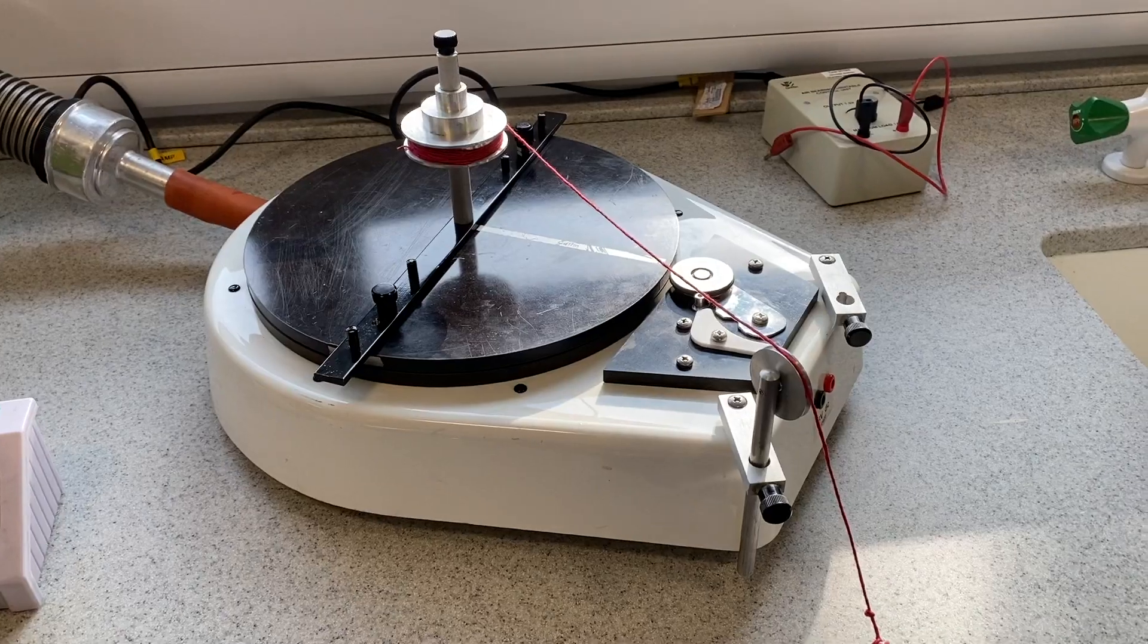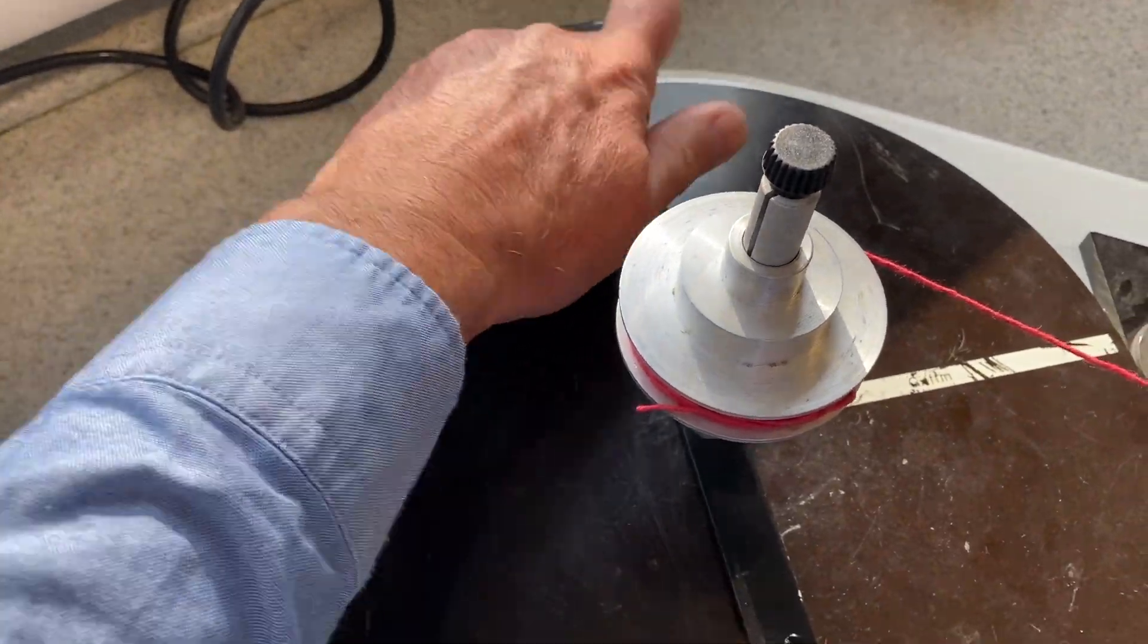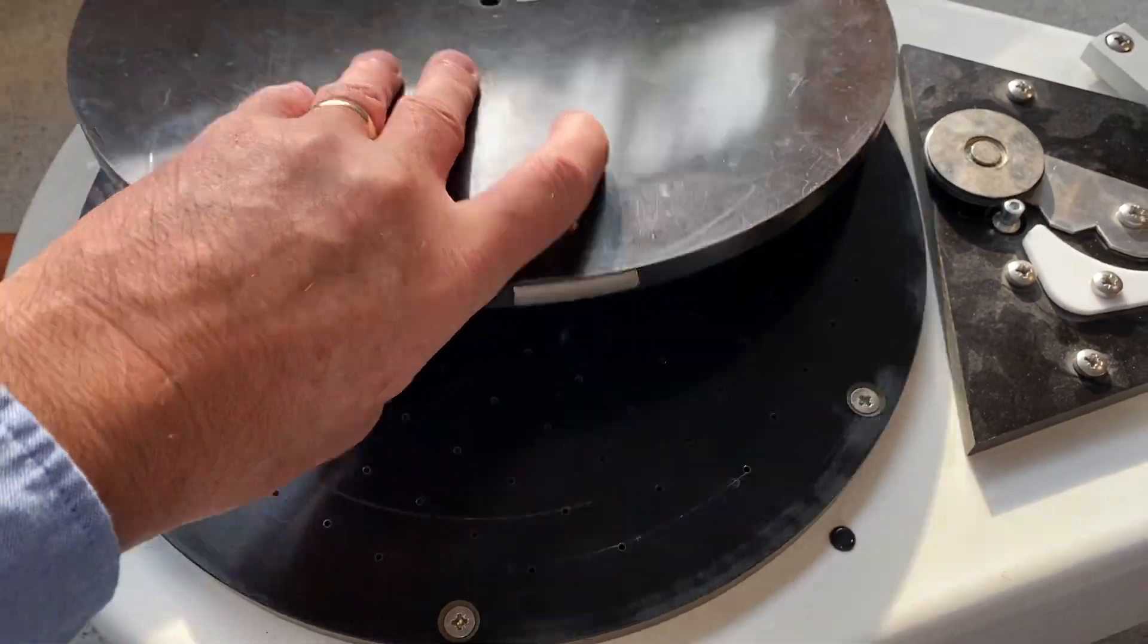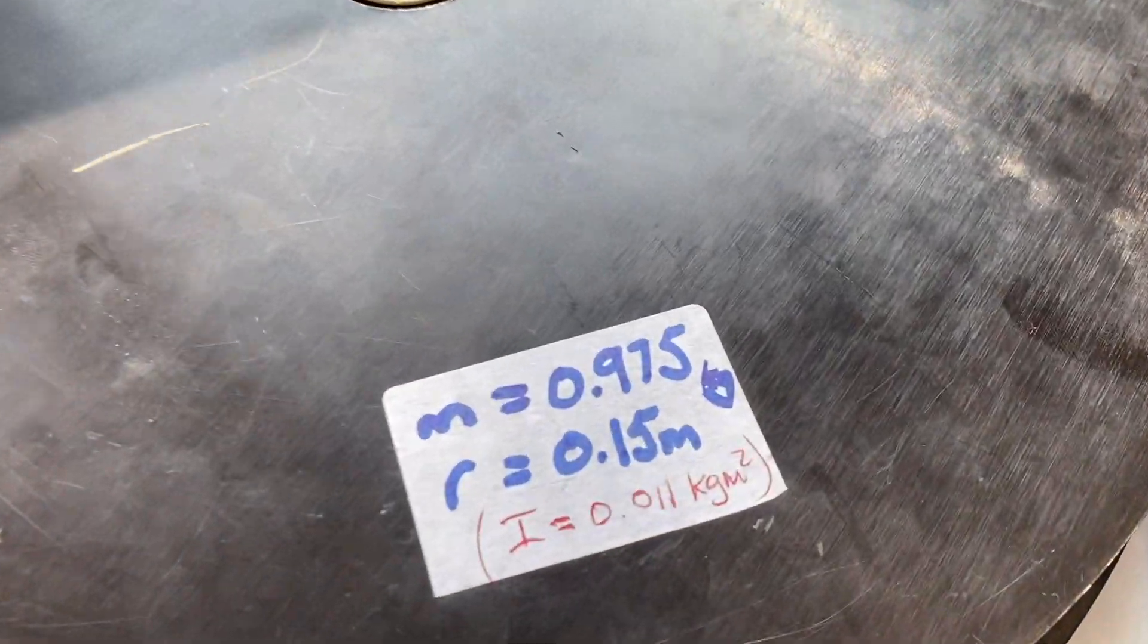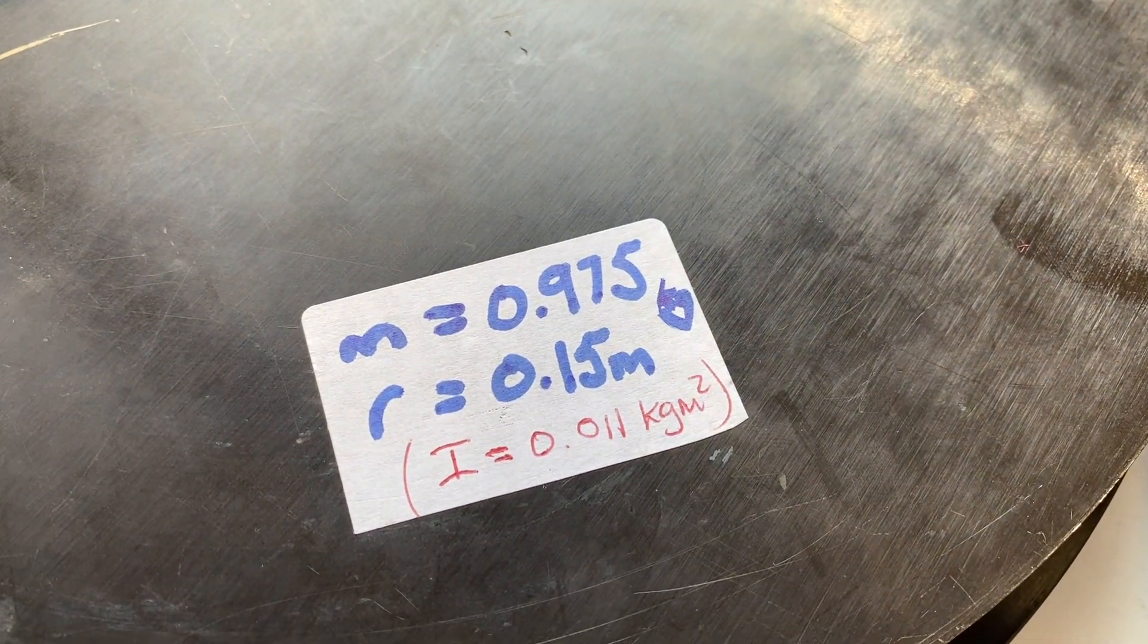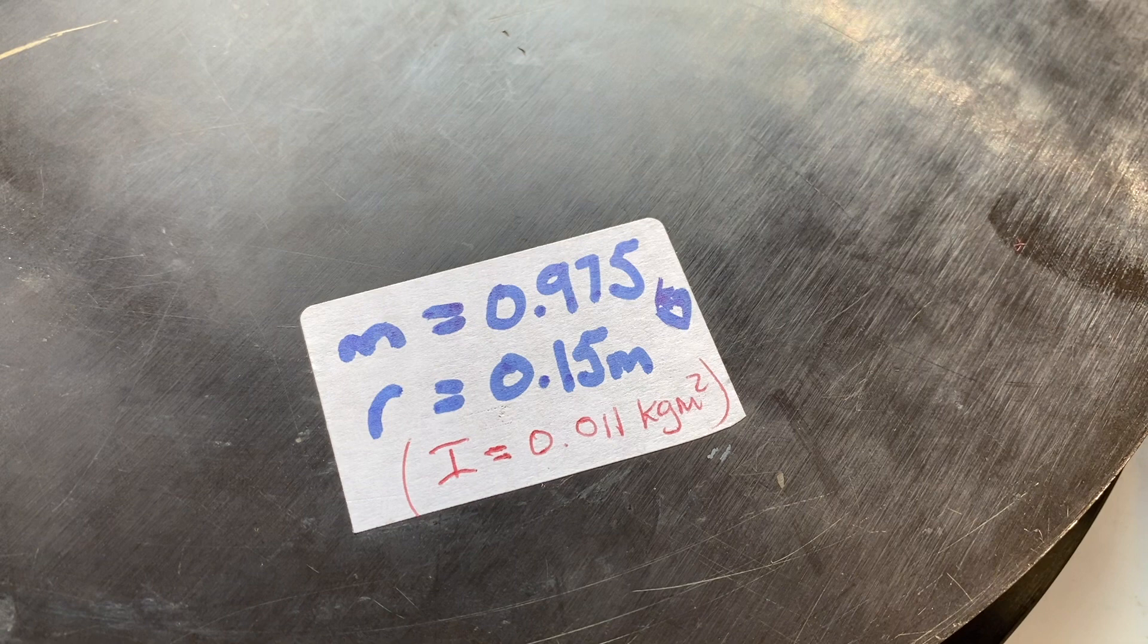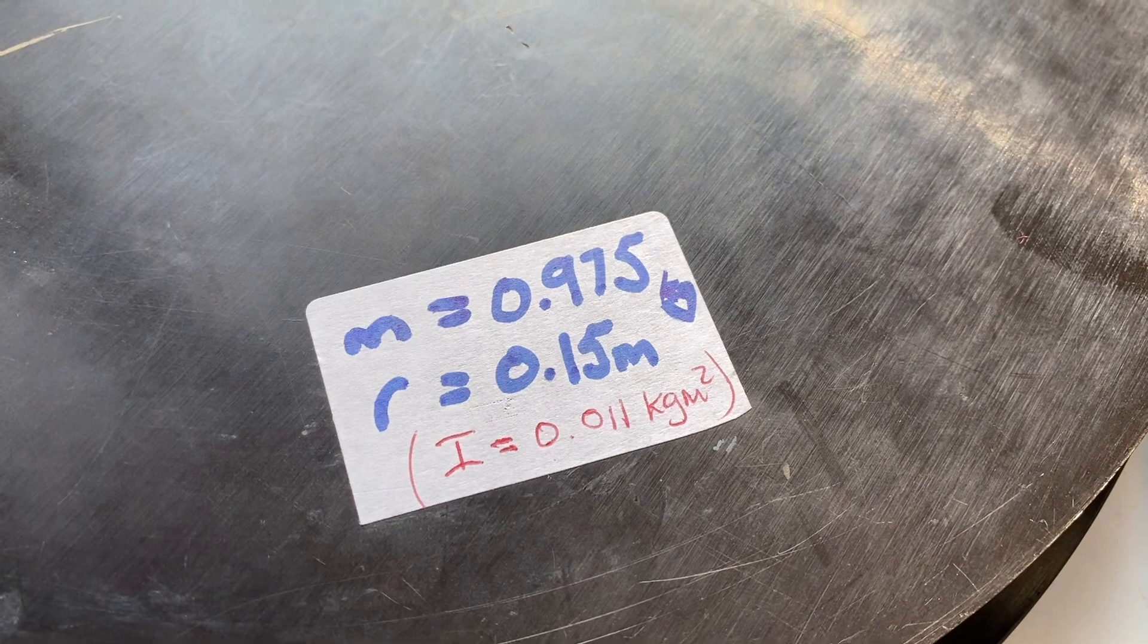Now our science technician informs me that he's put a sticker underneath the disk with its mass and its moment of inertia written on it. So, drum roll please. Here's the sticker. The mass, 975 grams, radius 15 centimeters, but more importantly, the moment of inertia, 0.011 kilogram meters squared. Here you go then.